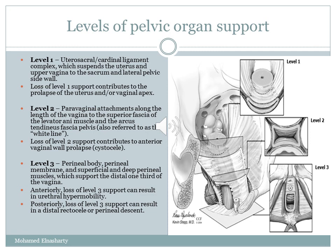Level two is the paravaginal attachment along the length of the vagina to the superior fascia of the levator ani muscle and the arcus tendineus fascia pelvis, referred to as the white line. Loss of level two support contributes to anterior vaginal wall prolapse or cystocele. Level three is the perineal body, perineal membrane, and superficial perineal muscles, which support the distal one third of the vagina anteriorly. Loss of level three support can result in urethral hypermobility anteriorly, and posteriorly in distal rectocele or perineal descent.